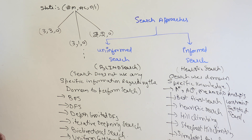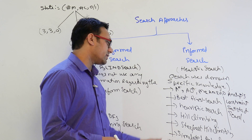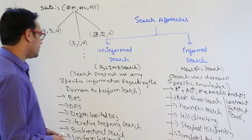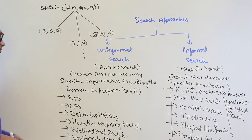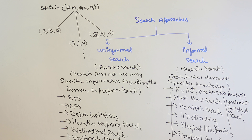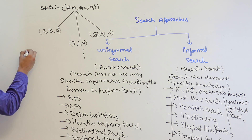In the case of heuristic search, and also blind search, we will be studying these algorithms. Apart from these, we have some other search properties for game search, such as min-max search, alpha-beta pruning, and two-player games.